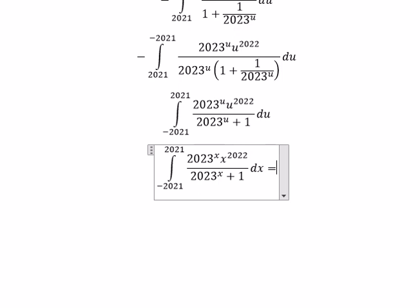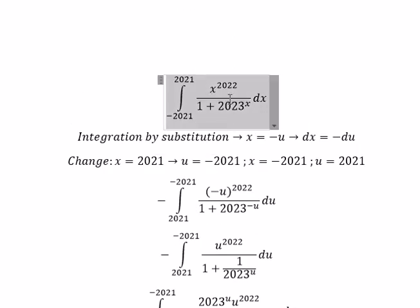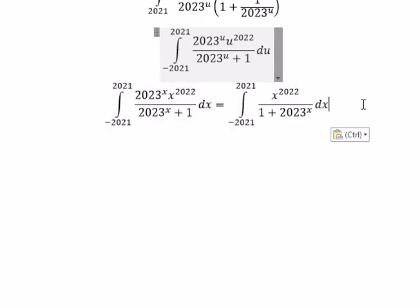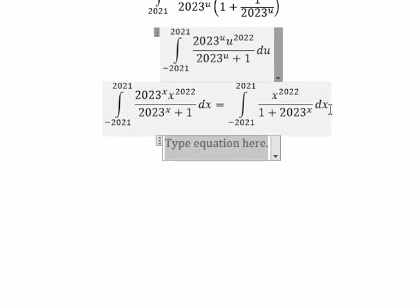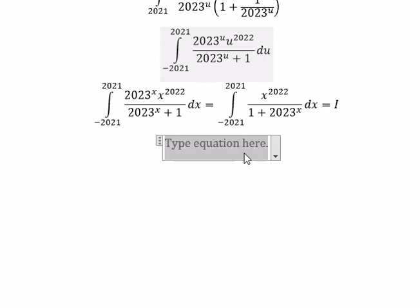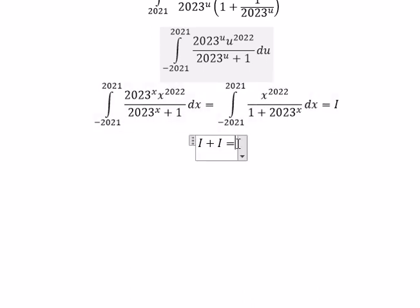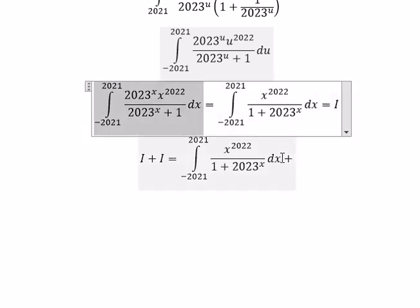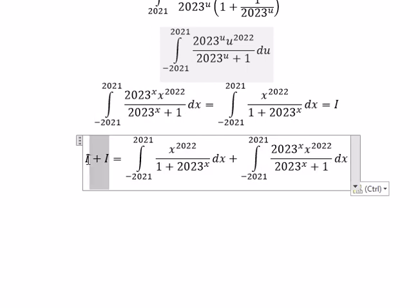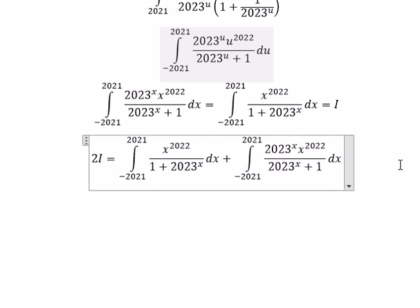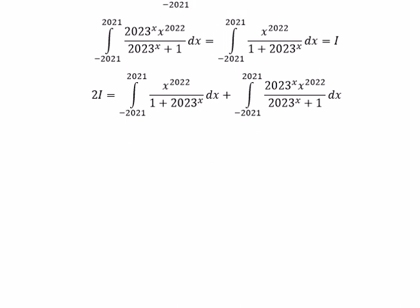Now we can change u back to s. And this one is equal to this one. So we combine two intervals together and we get capital I plus I, which equals 2I.